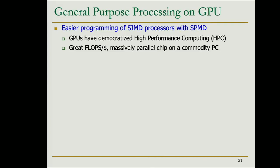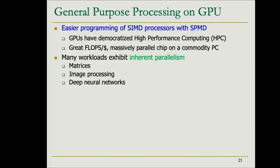GPUs are typically very good for workloads with inherent parallelism. The SPMD programming model also allows implementing irregular workloads with thread divergence, though performance degrades. GPUs are excellent whenever we have inherent and regular parallelism — examples include linear algebra, image or video processing, and deep neural networks.